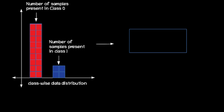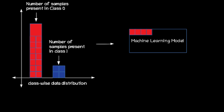Now let's proceed to train a machine learning model using these red and blue boxes. During training, the model is trained by sequentially feeding the red and blue boxes to ensure learning from both classes. The model will learn from both red and blue boxes, aiming to understand the patterns and relationships associated with each class.